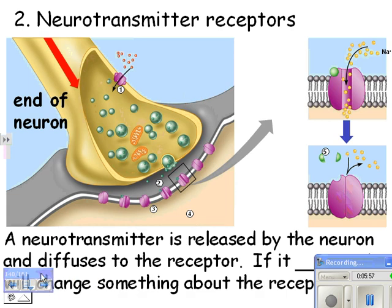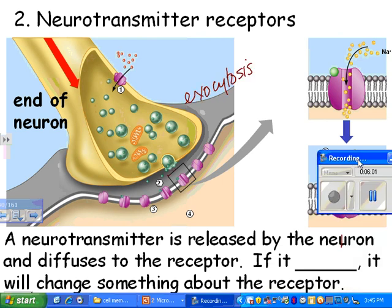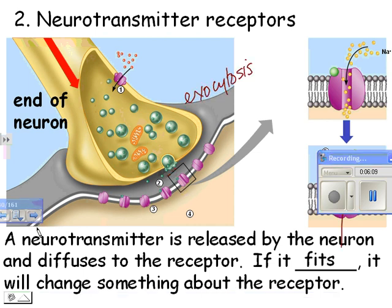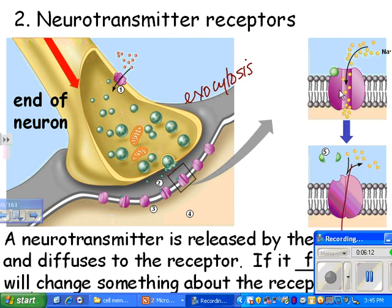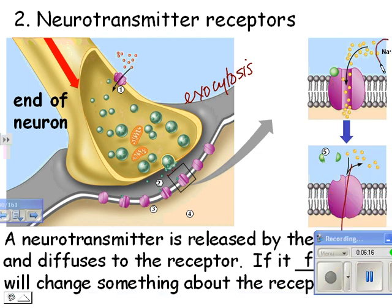A neurotransmitter is released by the neuron and diffuses to the receptor. If it fits, it will change something about the receptor. In this case, when it fits, it opens it up so sodium can come in. Remember, sodium is an ion, which is the electricity of the body. As soon as that sodium is in there, you have electricity moving — ions moving. That's the electricity of your body, telling the muscle cell to contract or the nerve cell to fire.